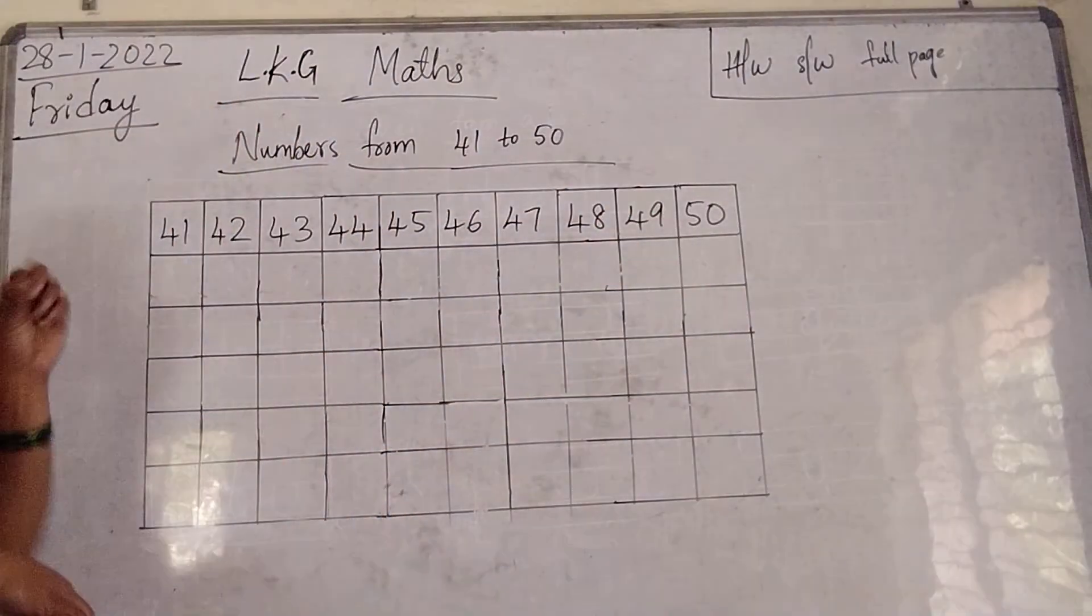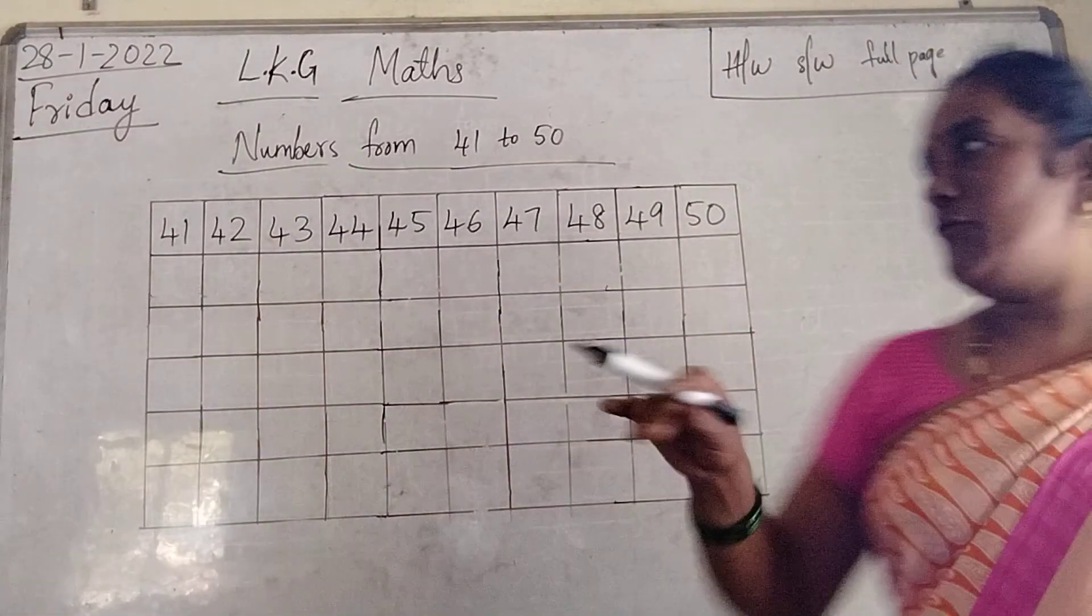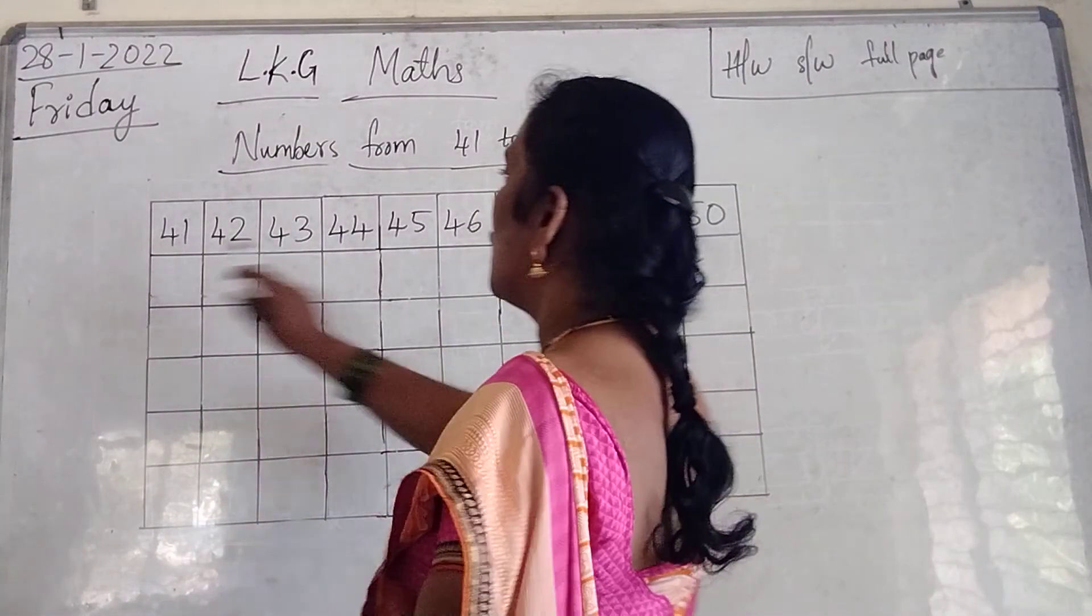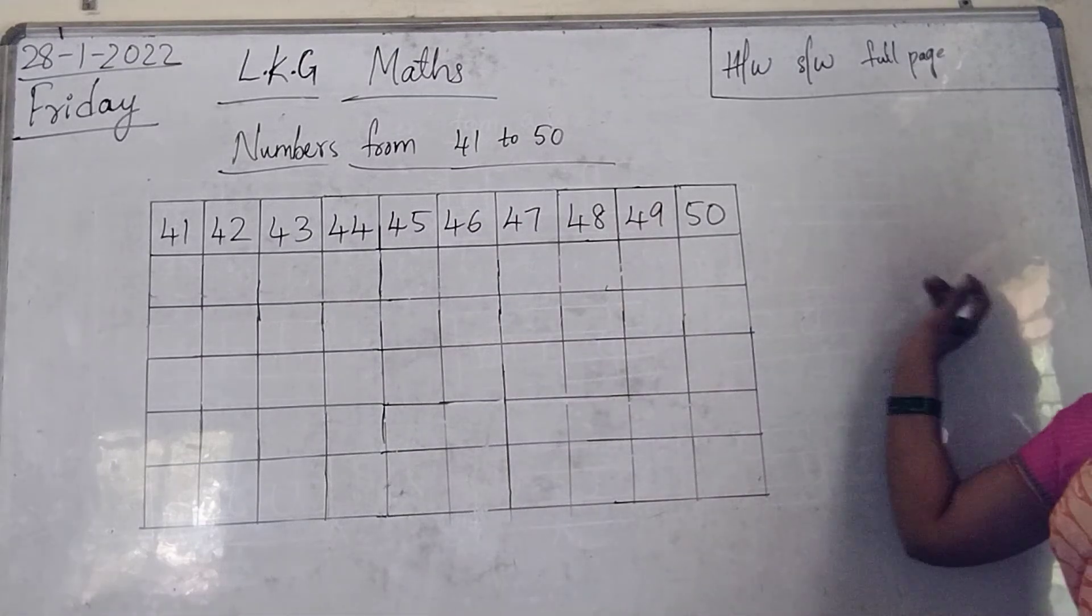Okay? You know 1 to 50 numbers. For today's homework, you practice numbers from 41 to 50. Say it and write.